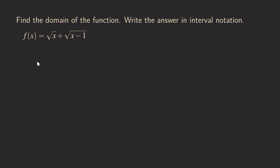First, we are going to consider the first function, the square root of x. For the square root of x, if we plug in a negative number we get an imaginary result. For real-valued functions, we only want the stuff inside the square root to be non-negative, meaning we require x to be greater than or equal to zero. That's the domain for the square root of x.